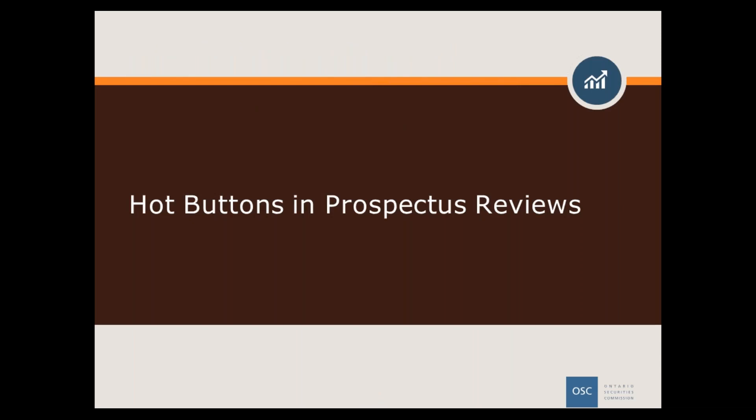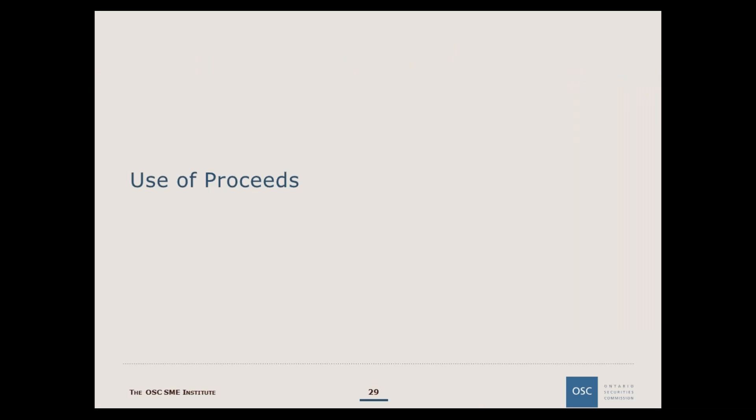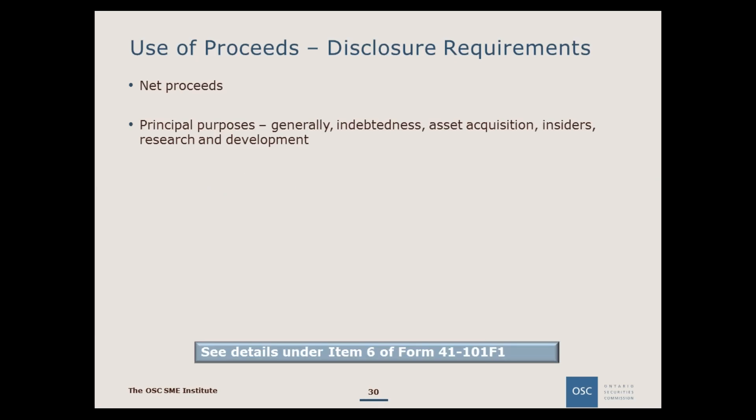Now I'll discuss some common areas of concern that we come across during prospectus reviews, starting with expected disclosures and the use of proceeds section. This section requires disclosure of the actual proceeds under the offering net of expenses. In the case where there is a minimum and a maximum, the net proceeds under each would also be required. An issuer must disclose each of the principal purposes of the offering, with approximate amounts for which the net proceeds will be used. We expect issuers to provide sufficient detail — generic phrases such as 'for general corporate purposes' would be viewed as insufficient disclosure. We generally expect an itemized description of how the proceeds will be used and an approximate allocation to each item.